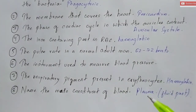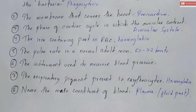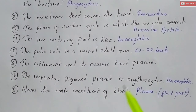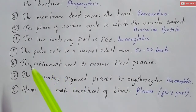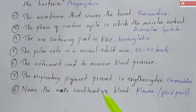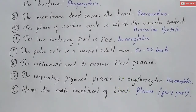These are some of the important 'name the following' type of questions mostly asked from the chapter on circulatory system. Do not forget to answer question number six in the comment section. If you want the PDF, you can download it from the description box of this video. If you have any doubts or queries related to your board examination, you can write to us in the comment section. Thank you.